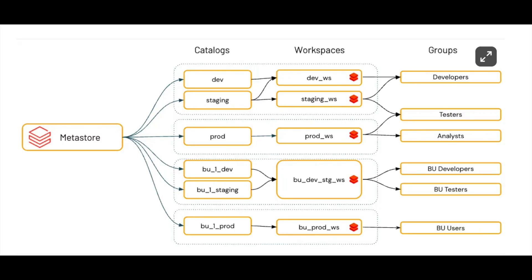Databricks doesn't actually give a lot of detailed best practices for Unity Catalog setup — they're fairly vague, probably because every company is so different. The most common guidance you'll find is: use different catalogs for production and development, and break your tables into different schemas logically. They don't give much guidance on workspaces because that's really user-dependent — it depends on whether you have an analyst group and an engineering group and how you want to handle access.